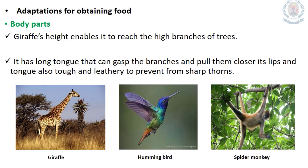Adaptations for obtaining food: animals must be able to get food to feed themselves, as food is essential for survival. Some animals have special body parts to help them find food. The giraffe's height enables it to reach the high branches of trees, and it has a long tongue that can grab branches and pull them closer. The giraffe's tongue is also tough and leathery to prevent injury from sharp thorns.